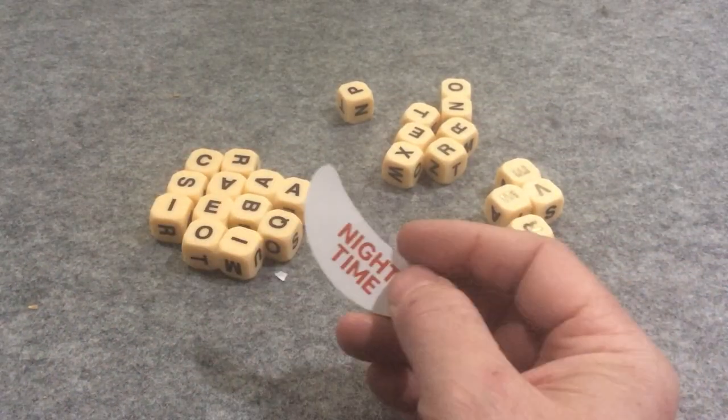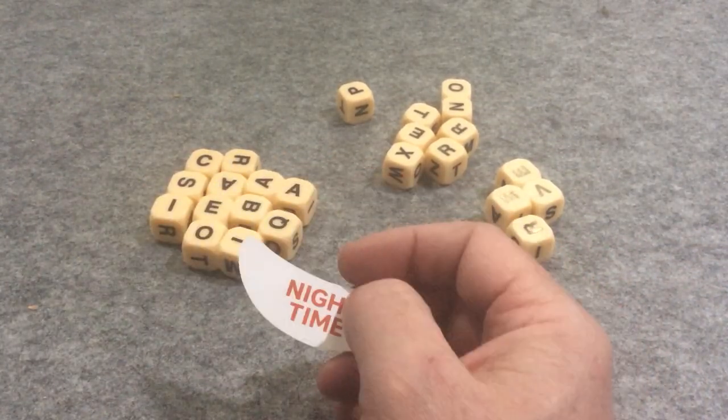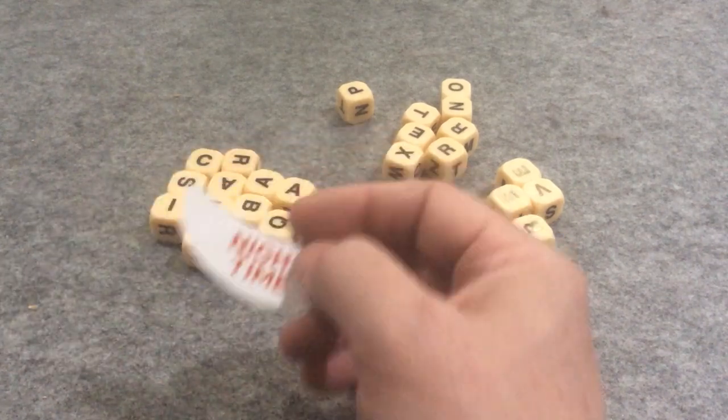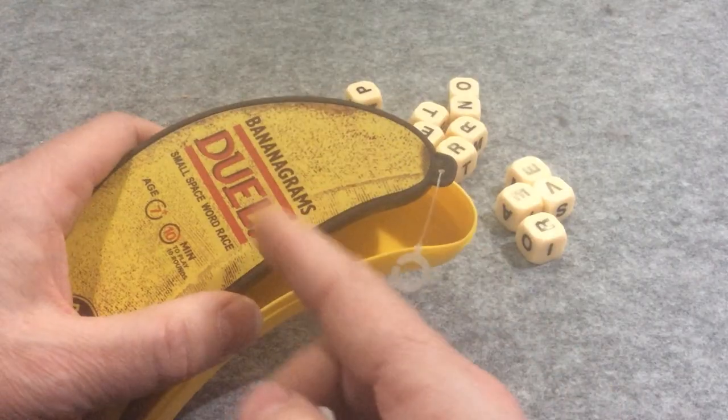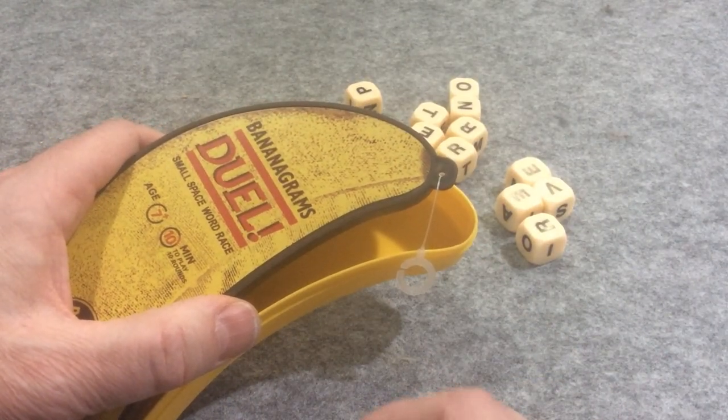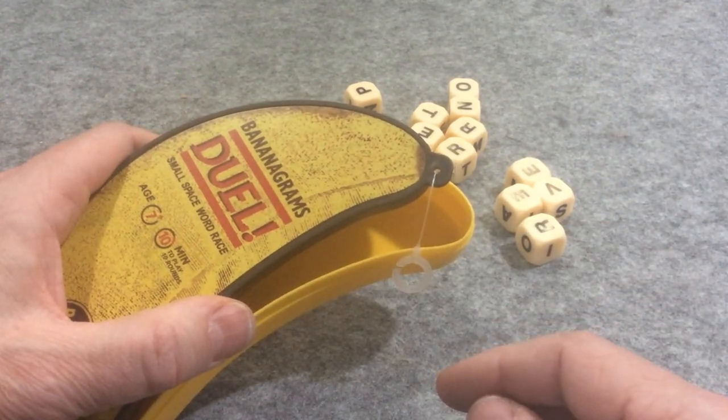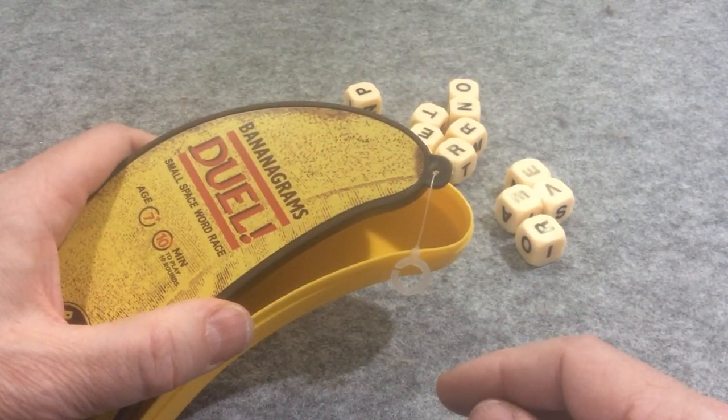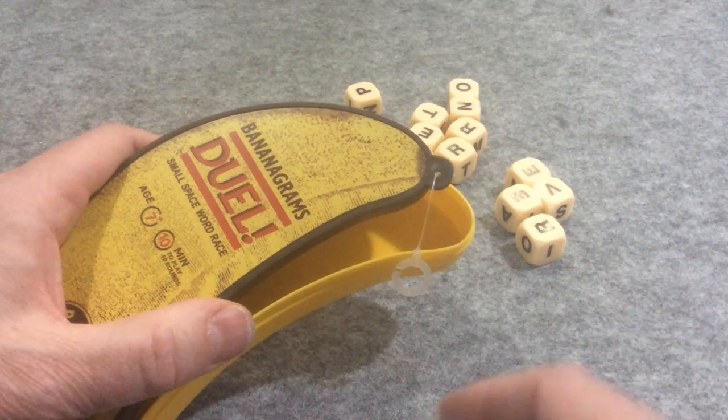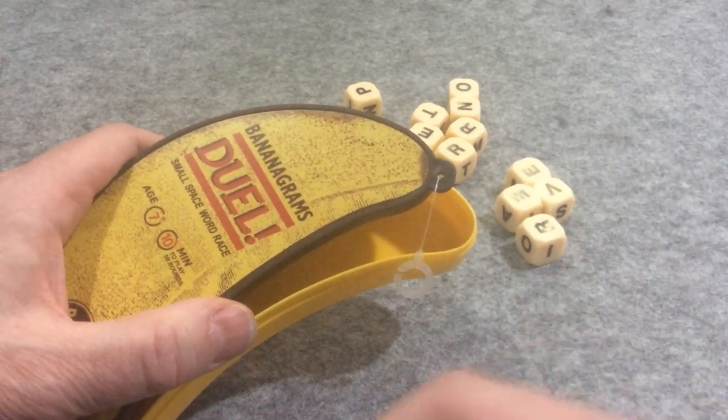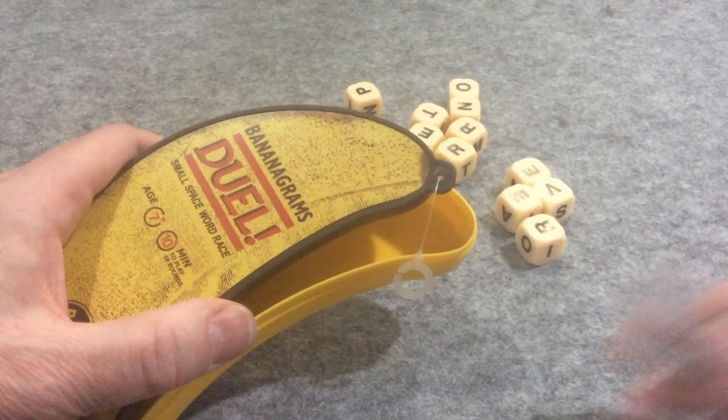So I mean, if you have more players, who's to say if you have two sets of this that four players can't play at the same time, each person having their own 12, right? The original Bananagrams Duel comes with 24 dice, which means 12 dice for two players. But who's to say that if you don't get multiple sets that multiple people can't play in the same round?